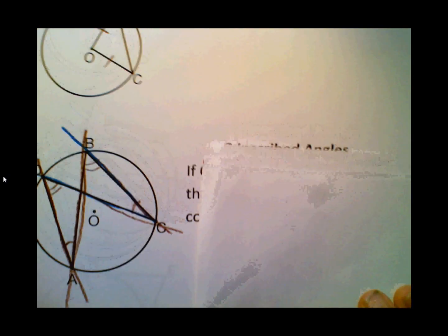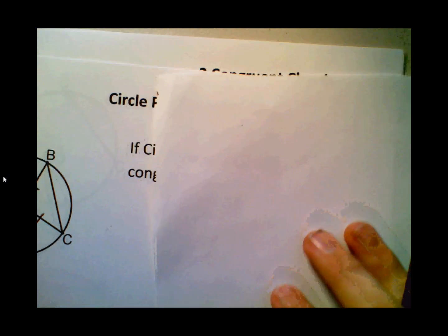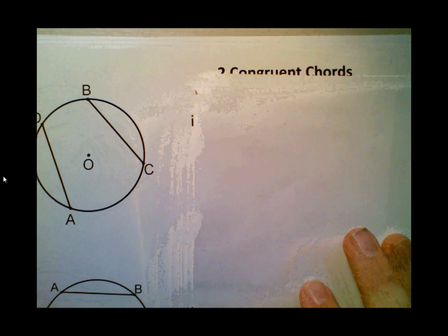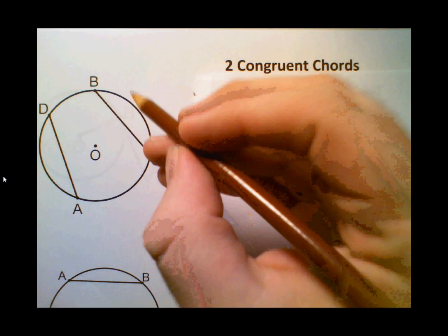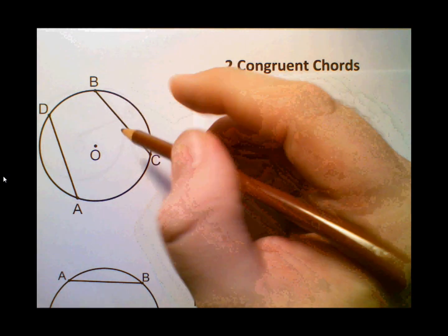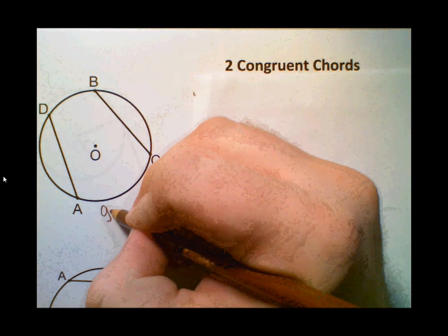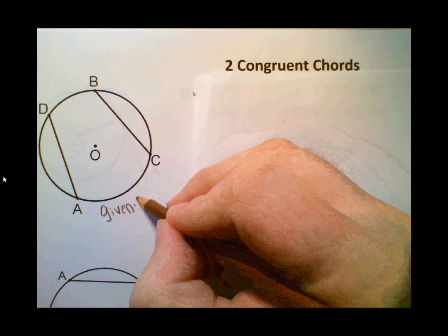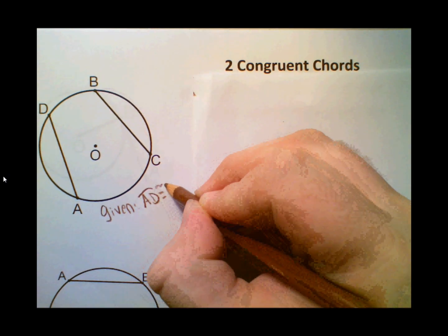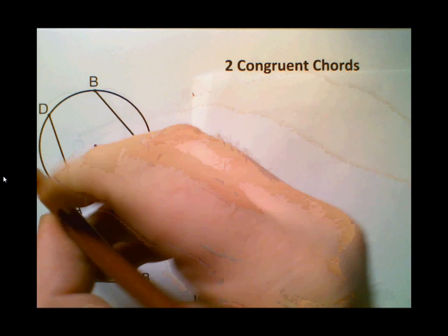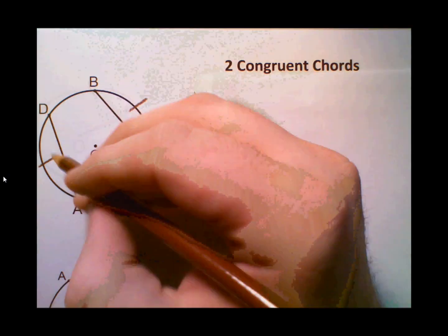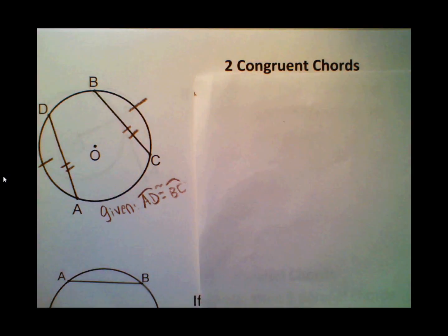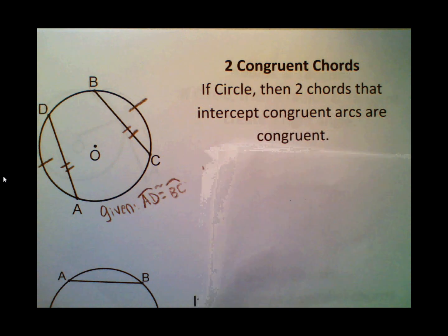So let's take a look at two congruent chords. Now, if I have two congruent chords, or sorry, rather, in this case, when we're talking about triangle proofs, you're really going to be looking at the arcs. You're going to be given some information. Important information is that arc AD is going to be congruent to arc BC. If you're given that information, then I know that the chords that intercept those arcs are congruent as well. The reason that we can say in a proof is that if circle, then two chords that intercept congruent arcs are congruent.